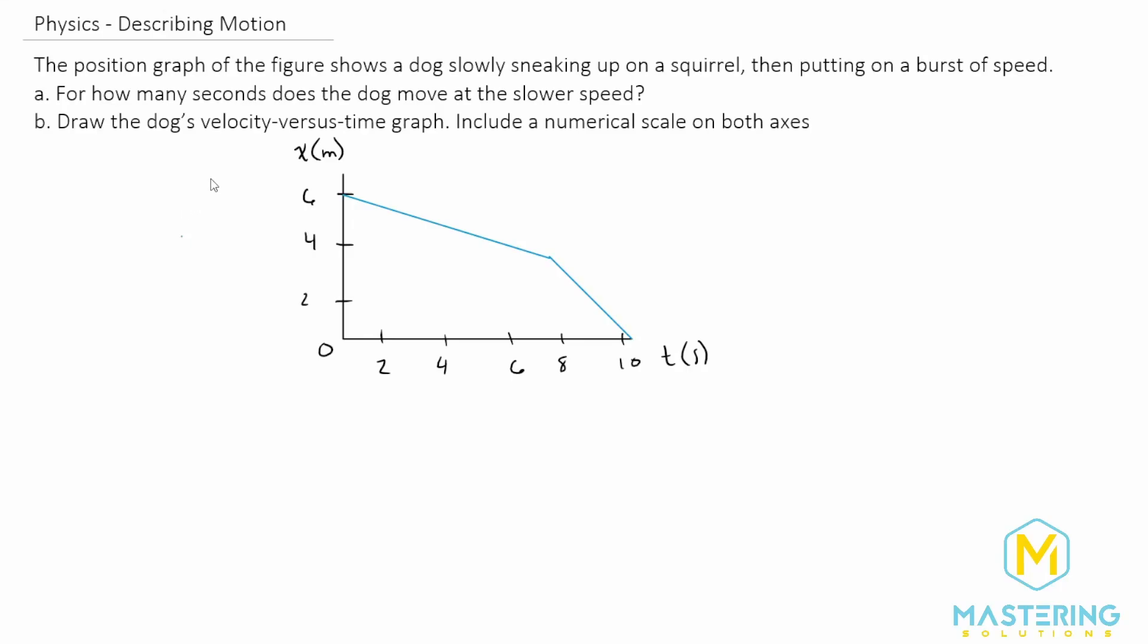Welcome to Mastering Solutions. The first part of this question asks us how long the dog was moving at the slower speed, and then they want us to convert this graph from this position versus time graph to a velocity versus time graph.